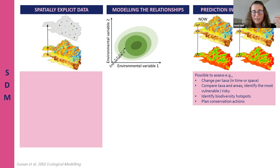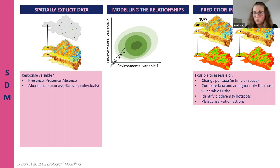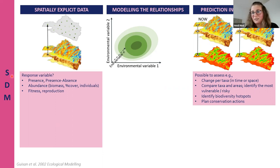In more detail, when we collect data on our response variable, it's usually presences, or in the best case presences and absences. We have locations where the species exists and sometimes where it does not exist, but we could also use abundance, biomass, percentage cover, or number of individuals. Some people suggest including some approximation of fitness effectiveness, because if a species is there it doesn't necessarily tell us if it can reproduce there - which is usually the measure of a niche.